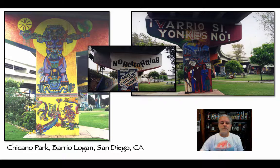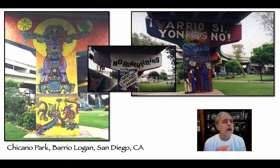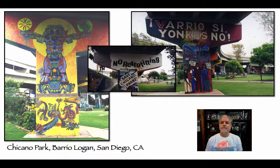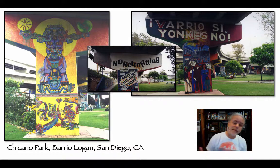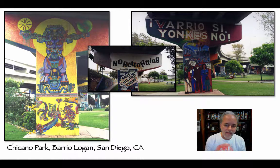There are a couple of images from Chicano Park in Barrio Logan down at the bottom of San Diego. Chicano Park is very famous — some of you may know about it or have even been there. If you're ever down in San Diego, it's literally right off the freeway — pull off the 5, and at the bottom of the off-ramp, you're basically there.